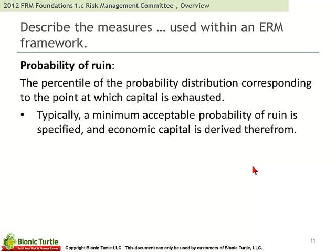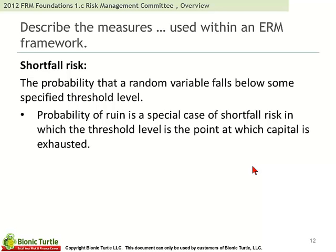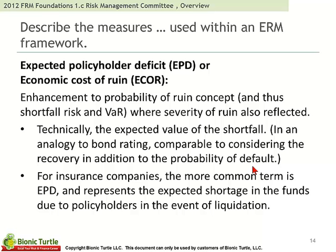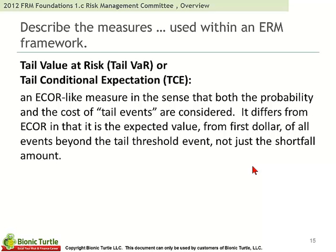Probability of ruin is the percentile of the probability distribution corresponding to the point at which capital is exhausted. Shortfall risk is the probability that a random variable falls below some specified threshold level. Value at risk — the key theme in the FRM — is the maximum loss an organization can suffer under normal market conditions over a given period of time at a given probability level. We also have expected policyholder deficit, or economic cost of ruin, and tail value at risk, or tail conditional expectation, which we look at in the Dowd reading, though it is frankly so qualitative here as to not be really relevant.